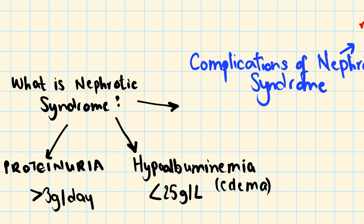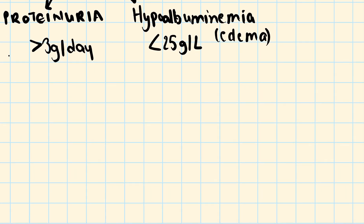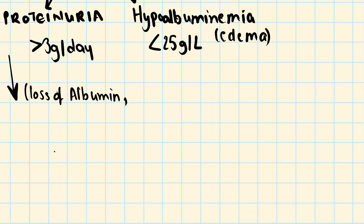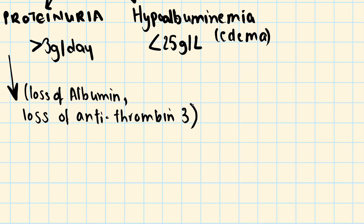We have discussed this in another video titled 'All About Nephrotic Syndrome.' Remember there is also a state of hyperlipidemia in nephrotic syndrome. Now, what kinds of proteins are lost in proteinuria? It means loss of albumin as well as loss of antithrombin 3.